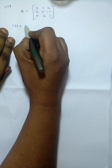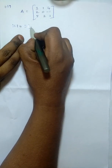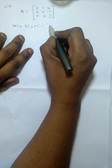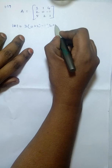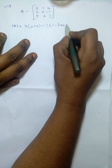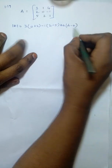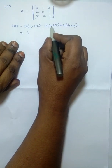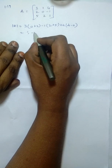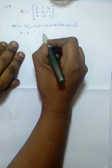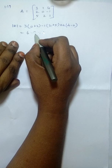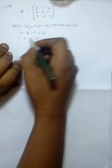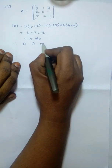The determinant of A is equal to 3 into (0 plus 2) minus 1 into (2 plus 5) plus 4 into (4 minus 0). That is equal to 3 times 2 = 6, 2 plus 5 = 7, minus 7; and 4 plus 4 = 16. So, 6 minus 7 is minus 1, minus 1 plus 16 is 15, which is not equal to 0. Therefore, A is non-singular.